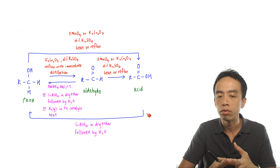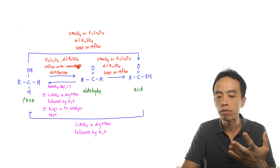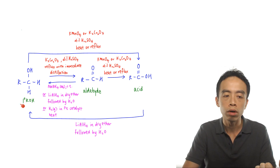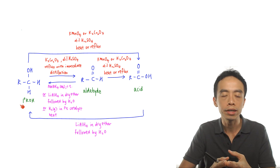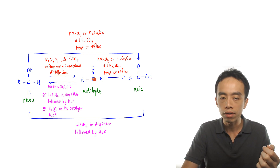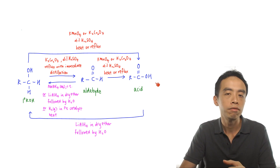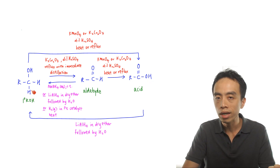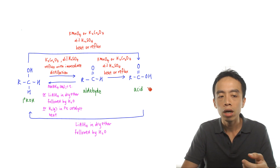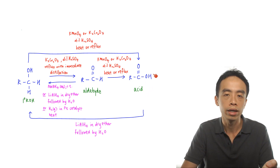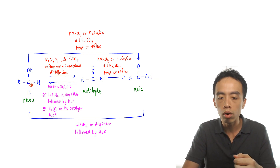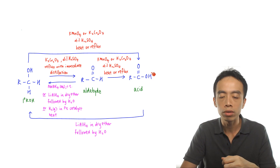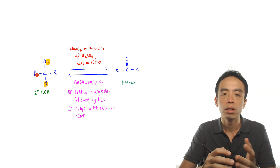Putting all these reactions together gives us a useful diagram covering oxidation of primary alcohol to aldehydes and carboxylic acids, as well as reduction of aldehydes and carboxylic acids to primary alcohols. Key point: a primary alcohol is linked to an aldehyde, which is linked to a carboxylic acid. To get a carboxylic acid or aldehyde, you can only oxidize a primary alcohol — not a secondary or tertiary alcohol. Similarly, to get a primary alcohol by reduction, you must reduce an aldehyde or a carboxylic acid.